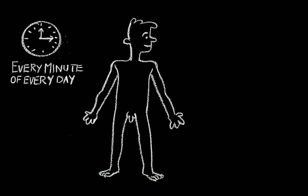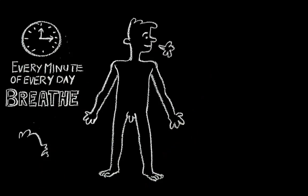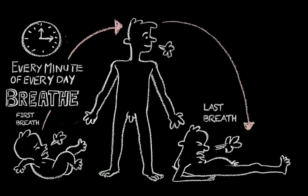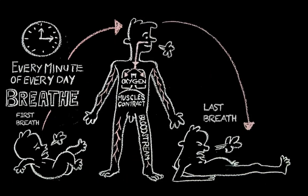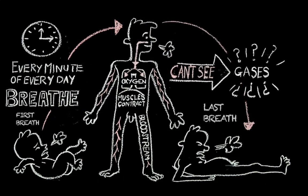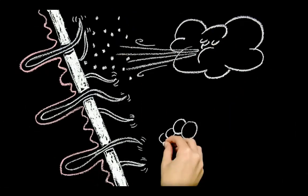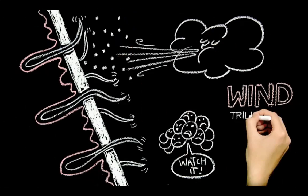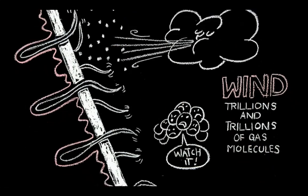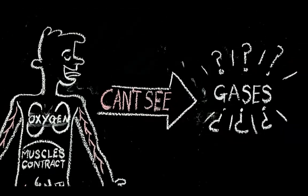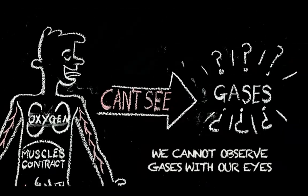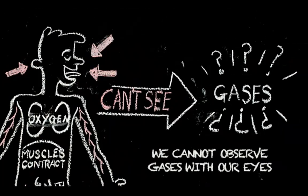Every minute of every day, you breathe without even thinking about it. Your body does it on its own from the day you're born until the day you die. You have muscles contract to bring oxygen — a gas — into your lungs, which is then transferred by your bloodstream to every cell in your body. Gases are strange. We can't see them, but we know they're there because we can feel them. What we experience as wind is really trillions and trillions of gas molecules slamming into your body.